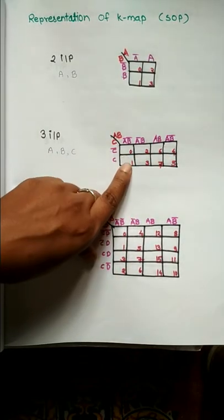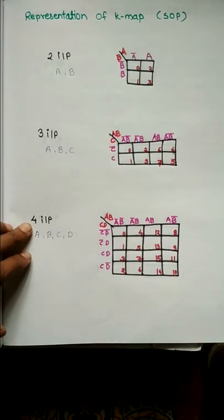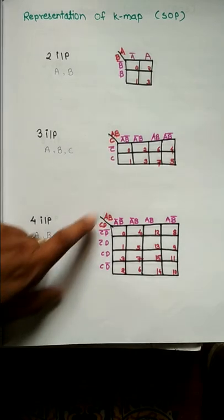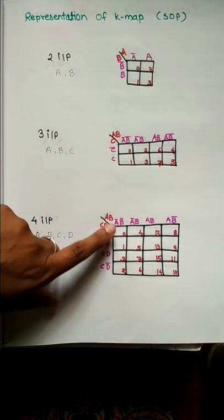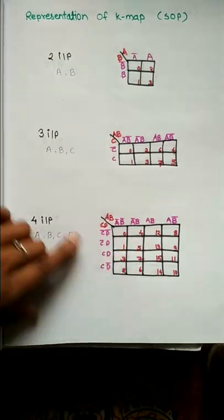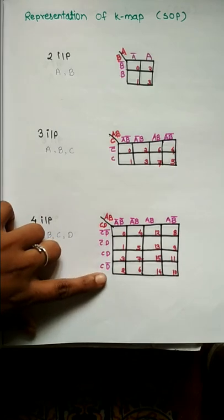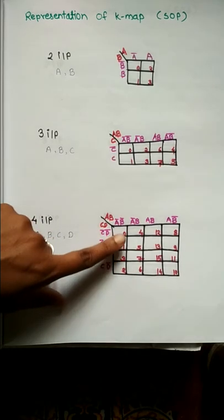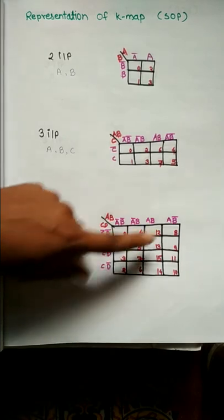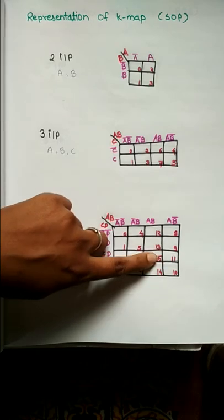Let's go for third one, that is for four inputs. Inputs are A, B, C, and D. Here it is AB input, here it is CD input: A'B', A'B, AB, and AB'. Here in same pattern, but only inputs are different: C'D', C'D, CD, and CD'. Focus on numbering: 0, 1, 2, 3, 4, 5, 6, 7, 8, 9, 10, 11, 12, 13, 14, 15.